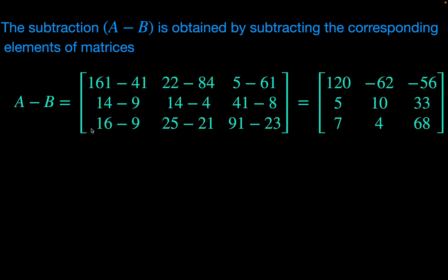Matrix subtraction follows the same process as matrix addition — we subtract the corresponding elements of matrix B from the terms of matrix A to get a 3×3 matrix. In this example, the resulting terms are: 120, minus 62, minus 56, 5, 10, 33, 7, 4, 68.